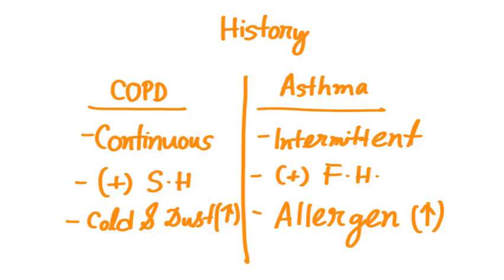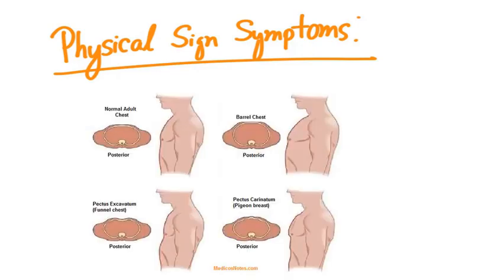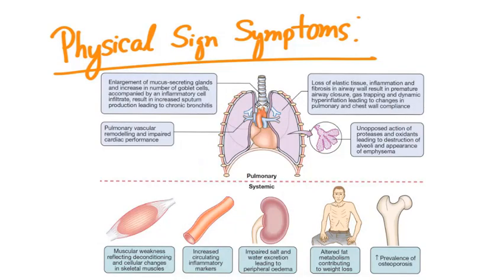On physical examination, in COPD the shape of the chest would be barrel chest — where the anterior-posterior diameter of the chest has become equal to the transverse diameter. In childhood asthma, the shape of the chest becomes pectus carinatum, or pigeon chest, where the sternum is pushed forward. The main difference in physical findings is the extra-pulmonary manifestations present in COPD but absent in asthma: increased prevalence of osteoporosis, muscle wasting, altered fat metabolism contributing to weight loss, increased circulatory inflammatory markers, and peripheral edema due to impaired salt and water excretion.